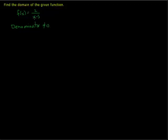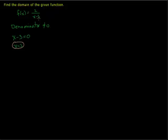So in this case, x minus 3 cannot be 0. One strategy is to actually set the denominator equal to 0 — x minus 3 equal to 0 — and solve for x. This gives us a value of x, in fact all values of x, that make the denominator 0.